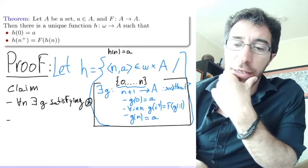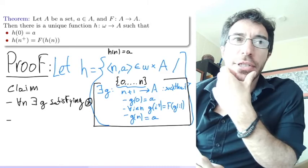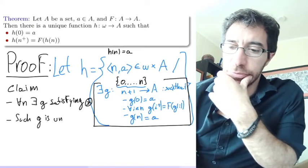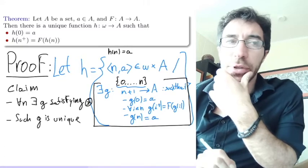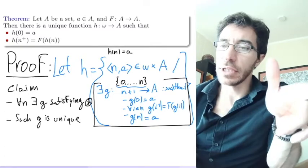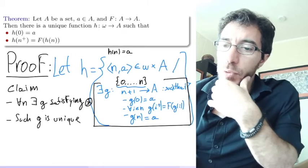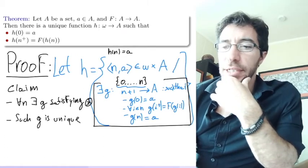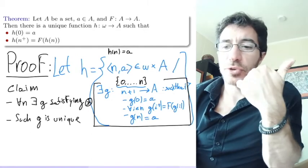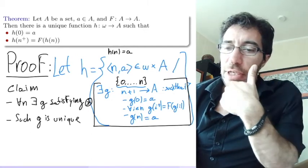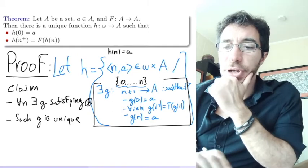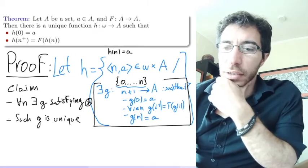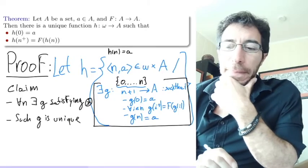And the other thing is that there is a unique such g, because we want also h to be a function. So we don't want to have two a's here. So if you have two different g's, we may have two a's here that satisfy this. So we need to show there's a function so that the g is unique. And also that such a g exists for n, for every n. So then we can actually have a function with domain the natural numbers.